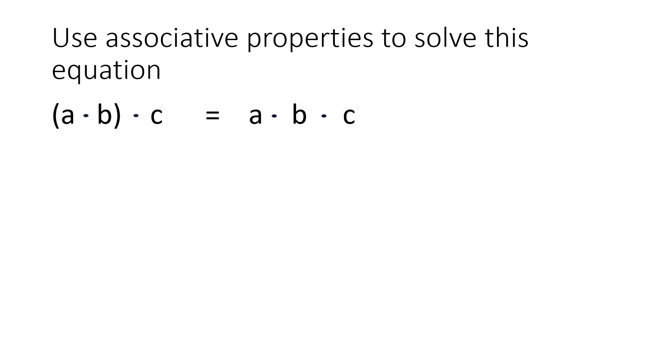Now, let's use associative properties to solve this equation, but this time it will be multiplication. Same thing, we put the parentheses on the second half of numbers. And let's say a equals 5, b equals 2, and c equals 1. We will then fill in the numbers.